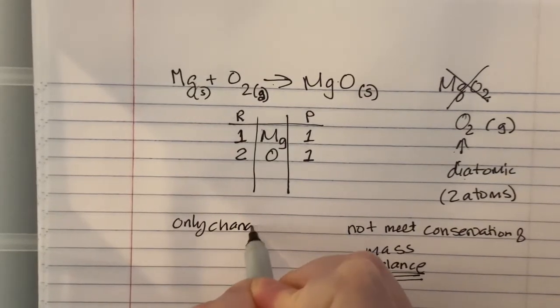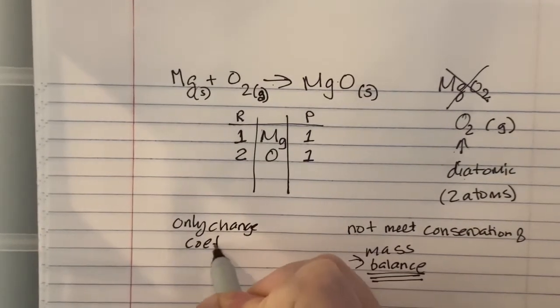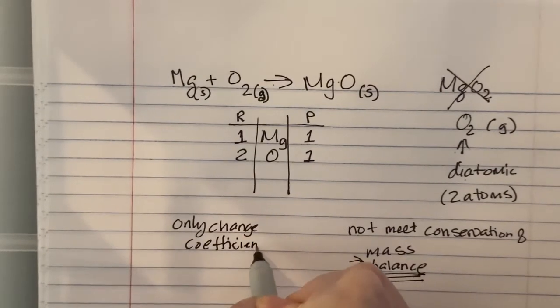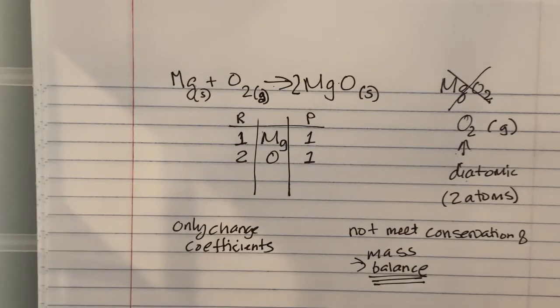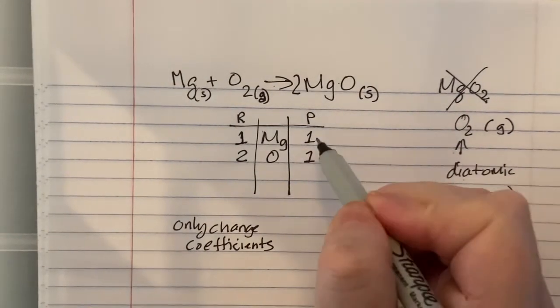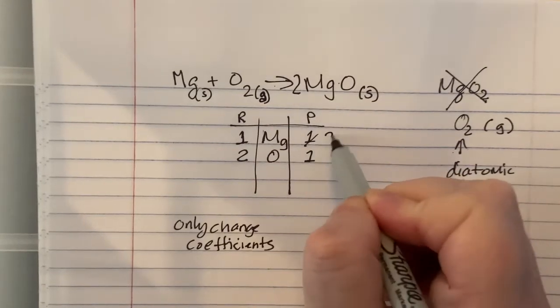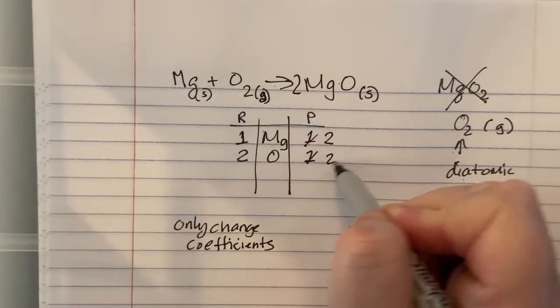That means I need to put a 2 in front of the MgO. As soon as you change your coefficient, go back and change your chart. I now have two magnesiums and two oxygens because remember, it's like we distribute.